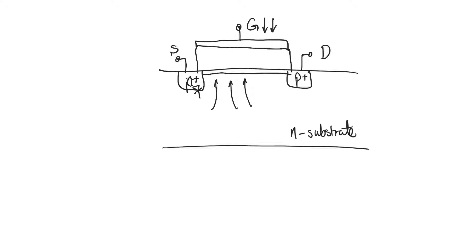Notice that there is a PN junction between the source and the body, and the drain and the body. For both PN junctions, the P-type is the drain and source, and the N-type is the substrate. To guarantee that these PN junctions are reverse biased, we connect the body of the PMOS to the highest voltage available, which is usually the supply voltage. This creates a depletion region around the drain and the source, guaranteeing no conduction from source or drain to the body.